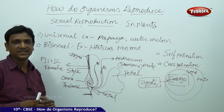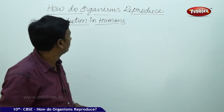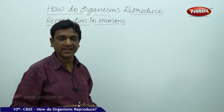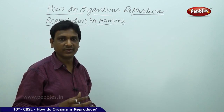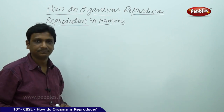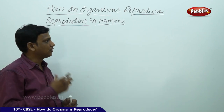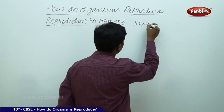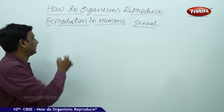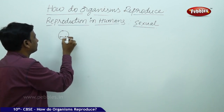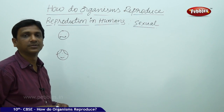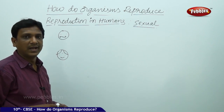Now let us see reproduction in human beings. Human reproduction is of sexual type. Sexual reproduction involves two organisms of different gender — one male and one female. Two organisms are involved in this process. For reproduction, reproductive cells are needed. When an organism — male or female — is capable of producing reproductive cells, that organism is eligible for reproduction.